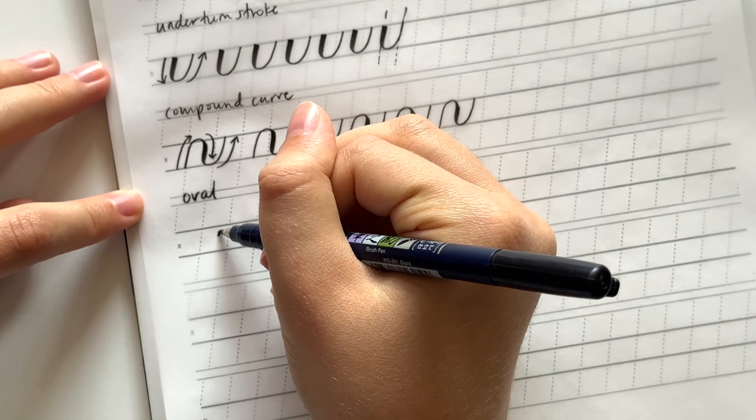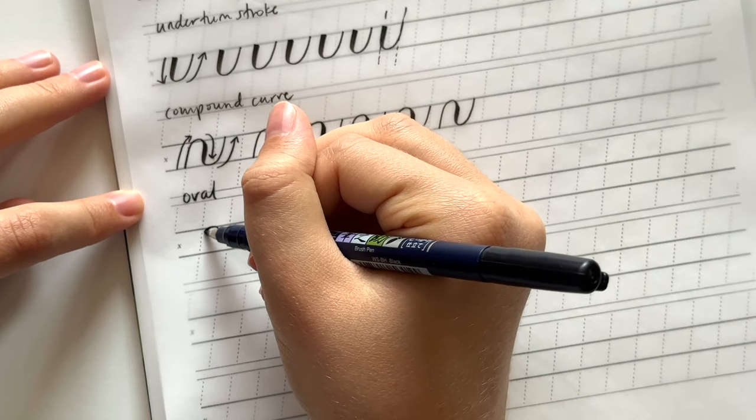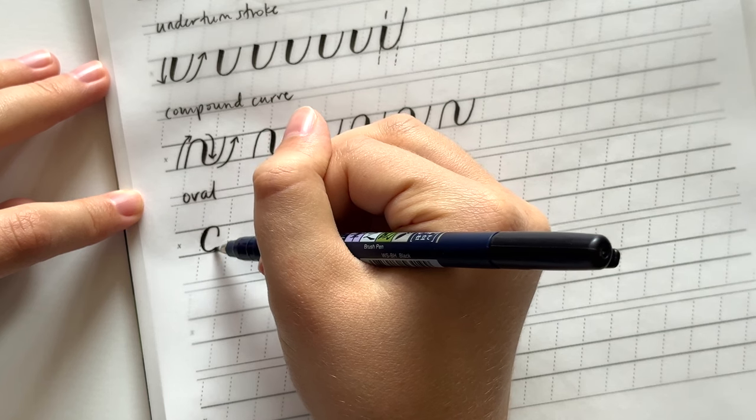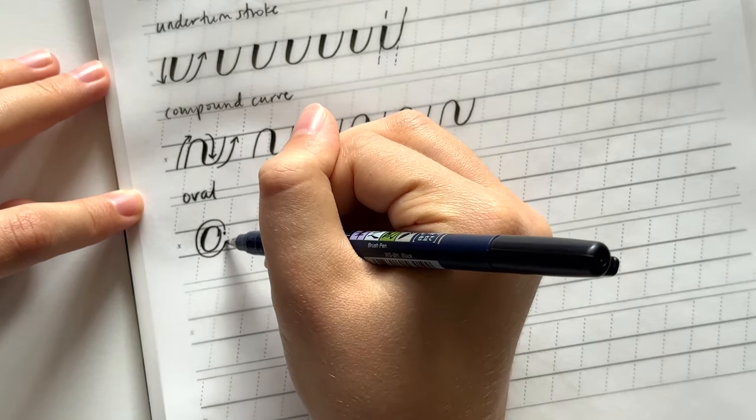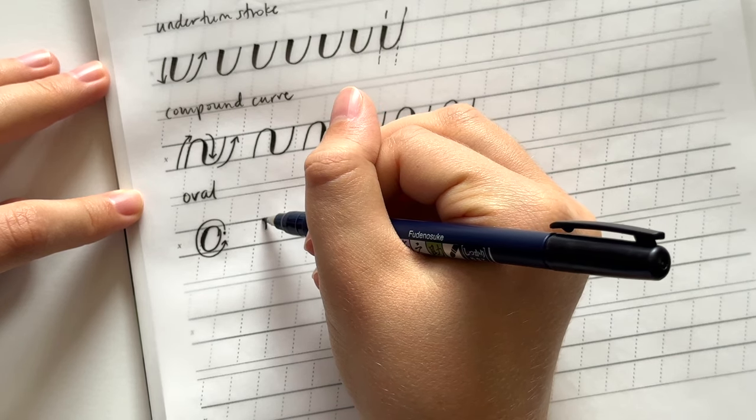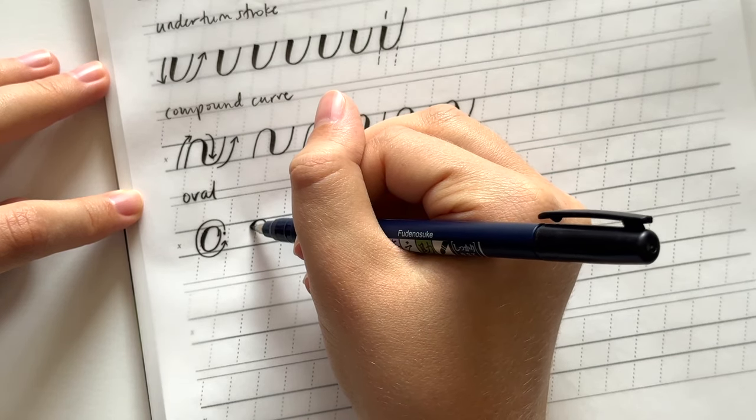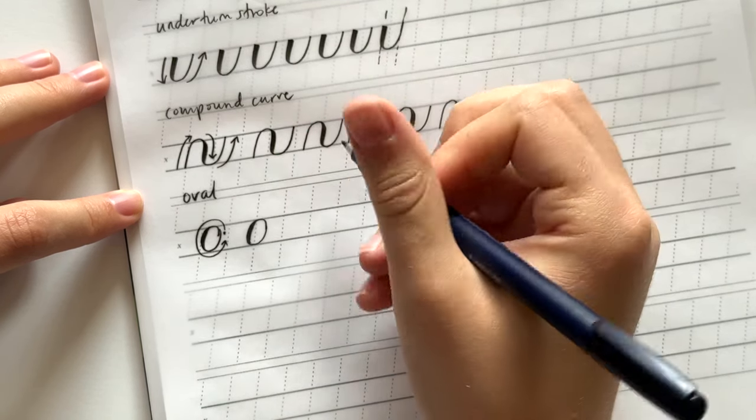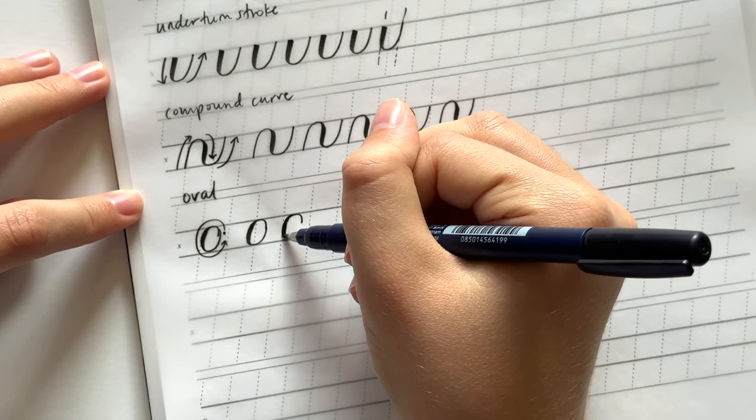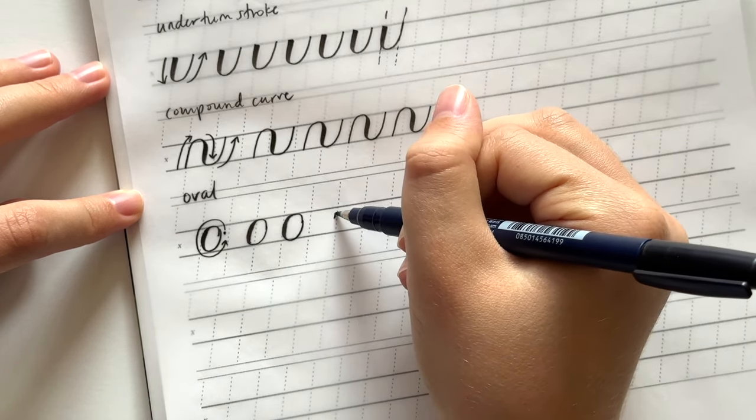The next basic stroke is the oval. So we're going to start on the right side and come around in a counterclockwise direction. So start here on the right side, come up light, then turn, come down with heavy pressure, and then come back up light to meet where we first started that oval. And if it doesn't connect perfectly that's totally okay.